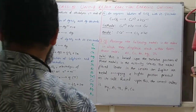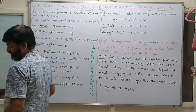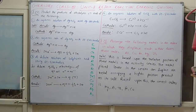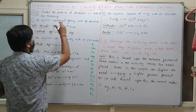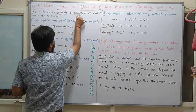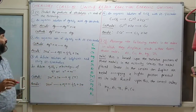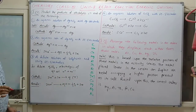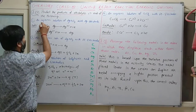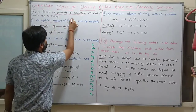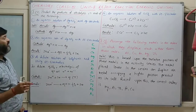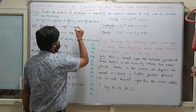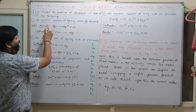Question 8.27: Predict the products of electrolysis in each of the following. First case: aqueous solution of silver nitrate with silver as electrode. At the anode, silver oxidizes — Ag → Ag⁺ + e⁻. This is oxidation.